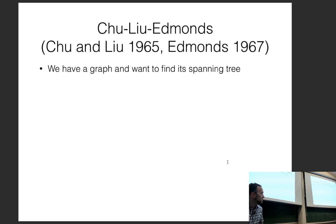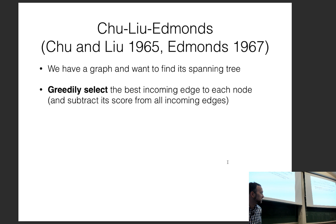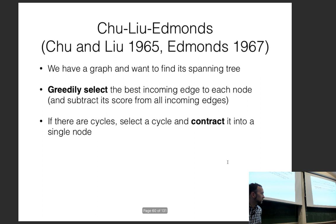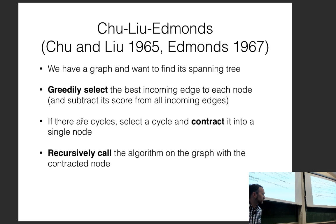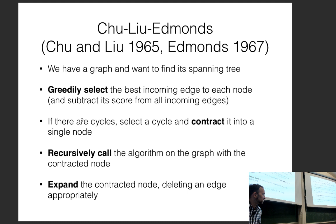The Chu-Liu/Edmonds algorithm is a dynamic programming algorithm that converts scored edges into a spanning tree. The procedure is: greedily select the best incoming edge to each node and subtract its score from all incoming edges; check for cycles; contract any cycle into a single node; recursively apply the algorithm to the contracted graph; then expand the contracted node and delete the inconsistent edge. For example, with 'book that flight,' if 'that' and 'flight' form a cycle, we contract them, recurse, expand, and delete the inconsistent edge.